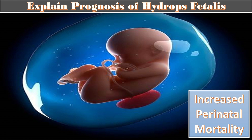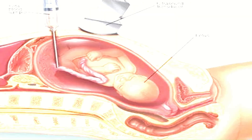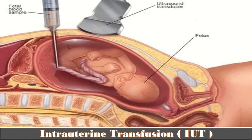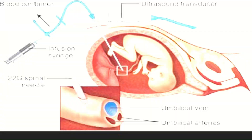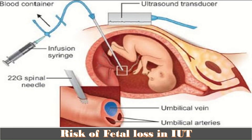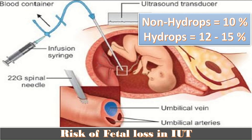In case of untreated hydrops, intrauterine death or early neonatal death ensues. Counsel the patient regarding intrauterine transfusion: only in cases of anemia secondary to parvovirus B19 or large fetomaternal hemorrhage is survival improved with repeated intrauterine transfusion, though the prognosis with parvovirus is not as good as with Rh incompatibility. Complications of intrauterine transfusion include red cell aplasia, myocarditis, and cardiac failure. The risk of fetal loss is 10 percent in non-immune hydrops and 12 to 15 percent in hydropic fetuses.